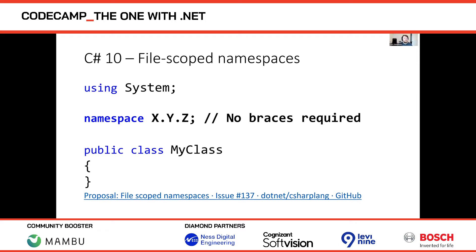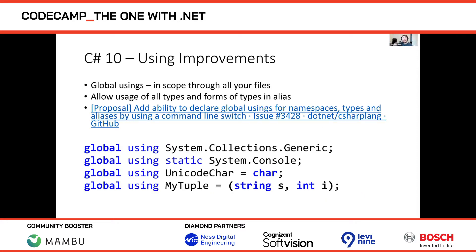With a file-scoped namespace you can't nest multiple namespaces — if you need that, you can still use braces. But for the really common case you just say 'this file uses this namespace.' We actually did a scan of code inside Microsoft and on GitHub covering millions of lines and millions of files, and literally 99.7–99.9% of files would benefit from this. Hopefully everyone will benefit for years.